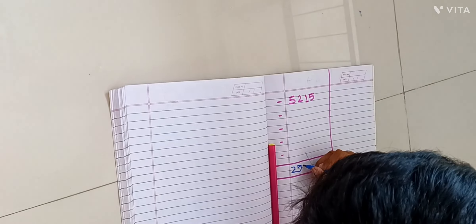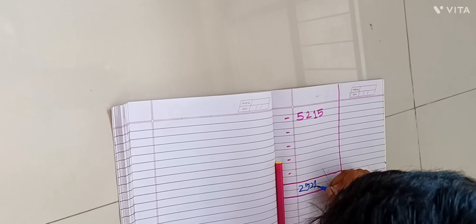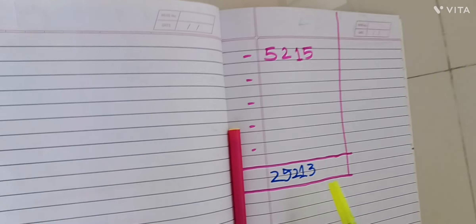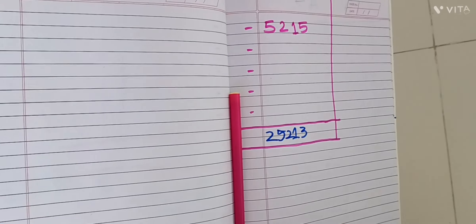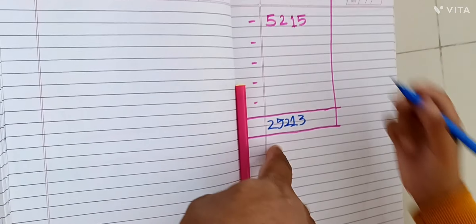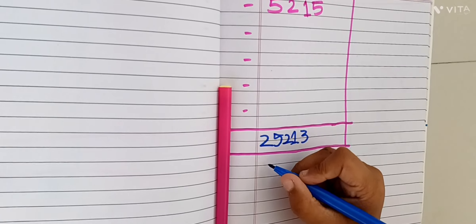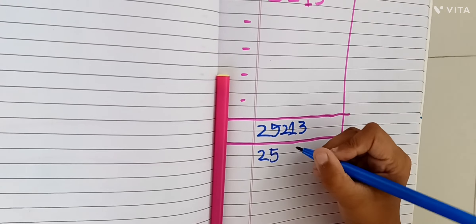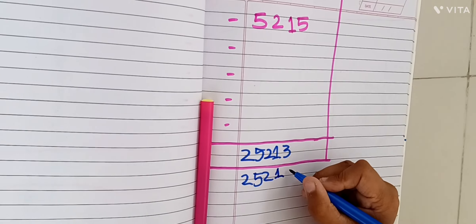Two. Two. One. Three. Two. Five. Two. One. Three. Probably. Four. One. Two. One. Two. And one.